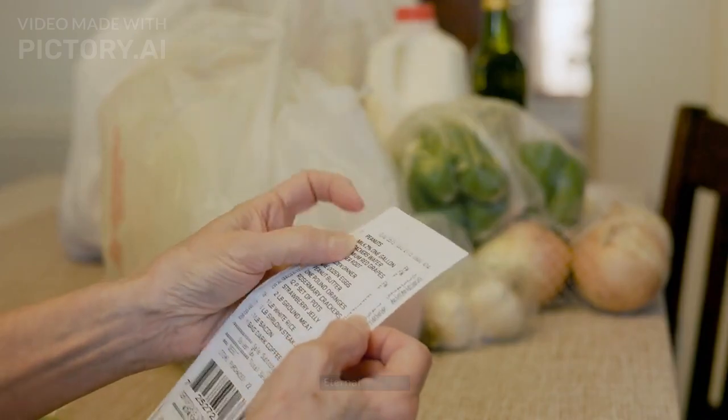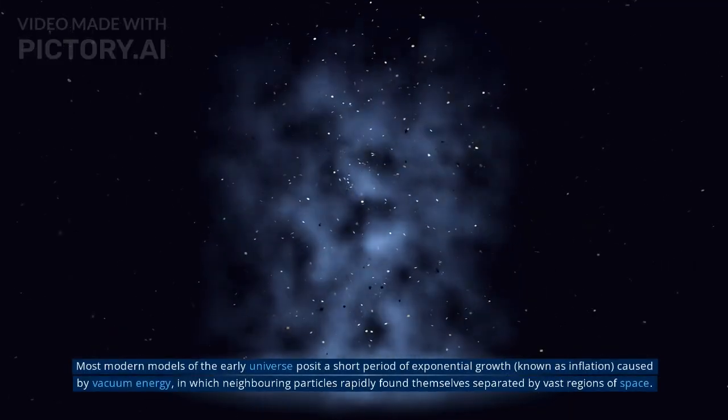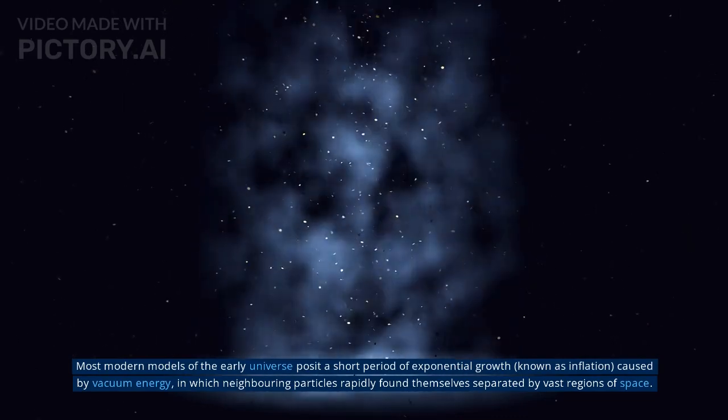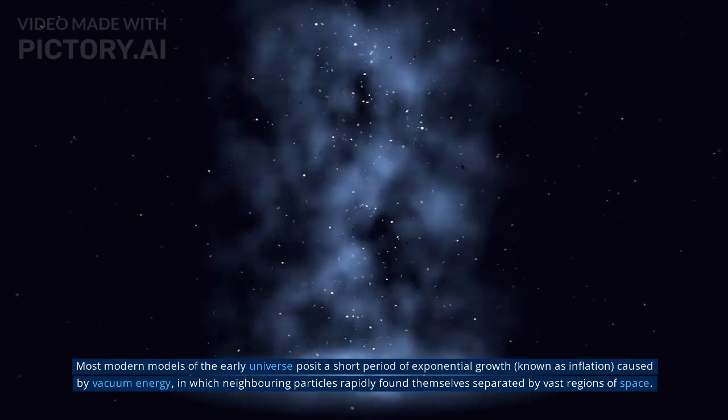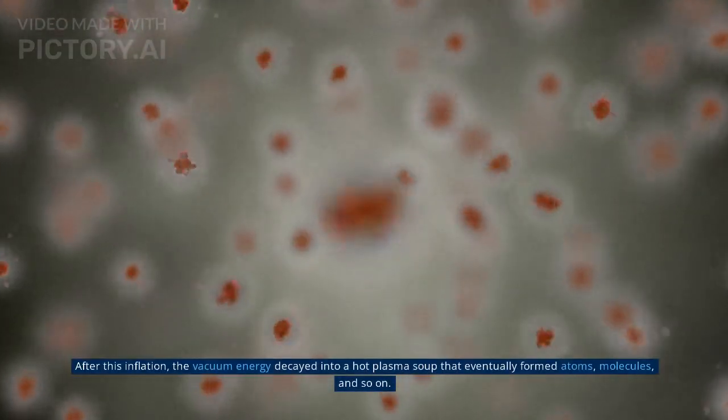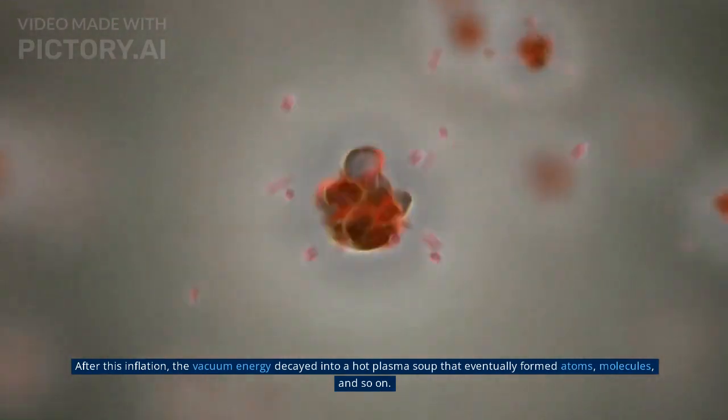3. Eternal Inflation. Most modern models of the early universe posit a short period of exponential growth, known as inflation, caused by vacuum energy, in which neighboring particles rapidly found themselves separated by vast regions of space. After this inflation, the vacuum energy decayed into a hot plasma soup that eventually formed atoms, molecules, and so on.